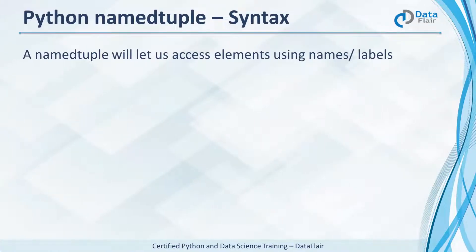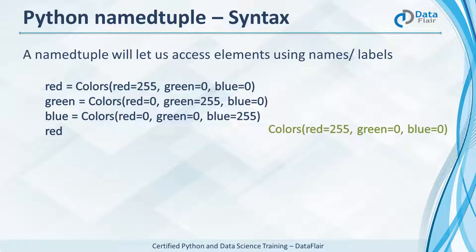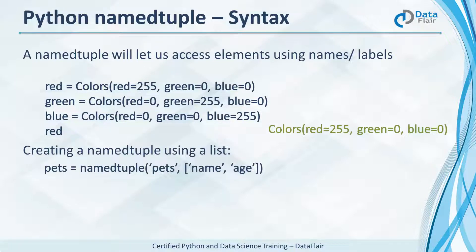What makes a named tuple different is that it lets you access elements using names. We have three named tuples red, green and blue. These hold the RGB values for the colors red, green and blue. The named tuple red is this. We can also create a named tuple using a list. Pets is a named tuple holding pet name and age. Fluffy is a pet with the values fluffy and nine — her name is fluffy and she is nine years old.